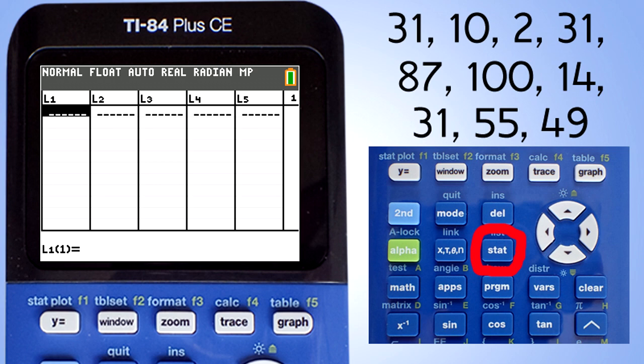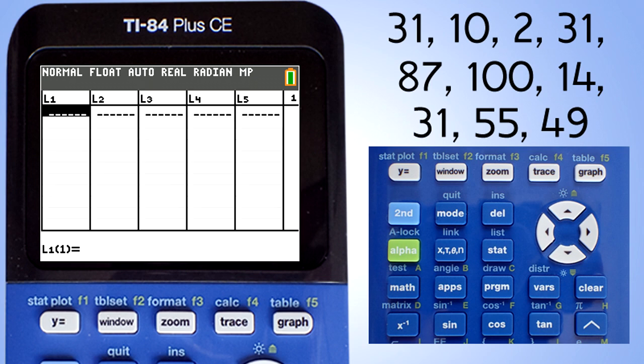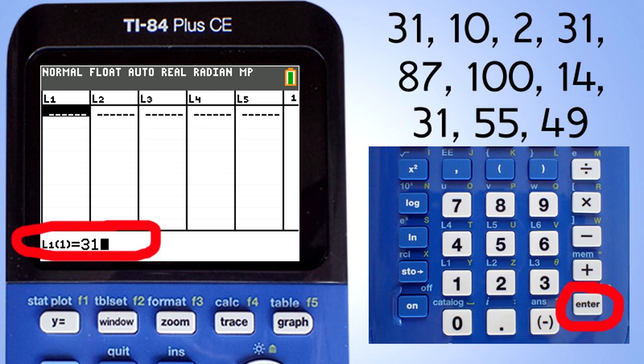Press the stat button again. Go to 1, edit, by pressing the 1 key or the enter button. We will start entering our numbers into the L1 list. Our first number is 31. Type in 31 and then press the enter button. Now type in the rest of the numbers in the same way.